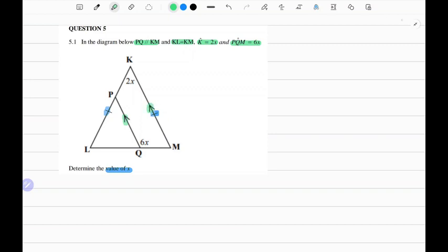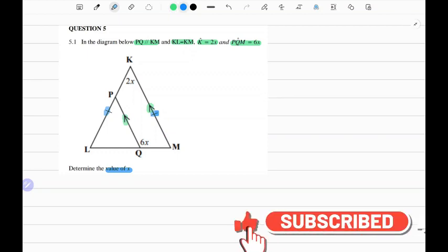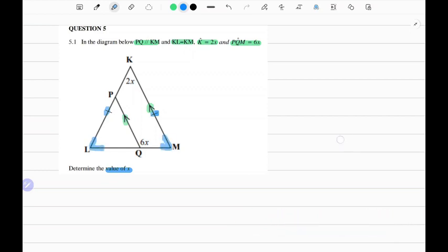We're asked to determine the value of X. One way to do this is if we can find angle L and angle M, then we can make use of the sum of interior angles of a triangle. If we can find these two angles, because we have 2X here, we can use the property of sum of interior angles of a triangle.